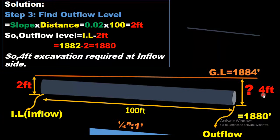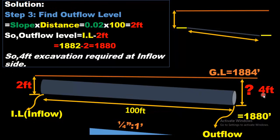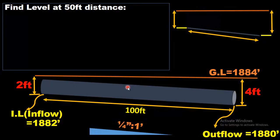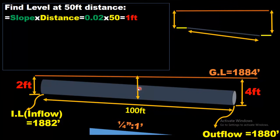By following these three steps — simplifying the slope, finding the inflow level, and finding the outflow level — you can determine the excavation depth at any point. At the end, let me show you how to find the level at any random distance. For example, at the mid-interval, at 50 feet distance: simply multiply slope by distance, and the distance is now 50 feet since the total distance is 100 feet.